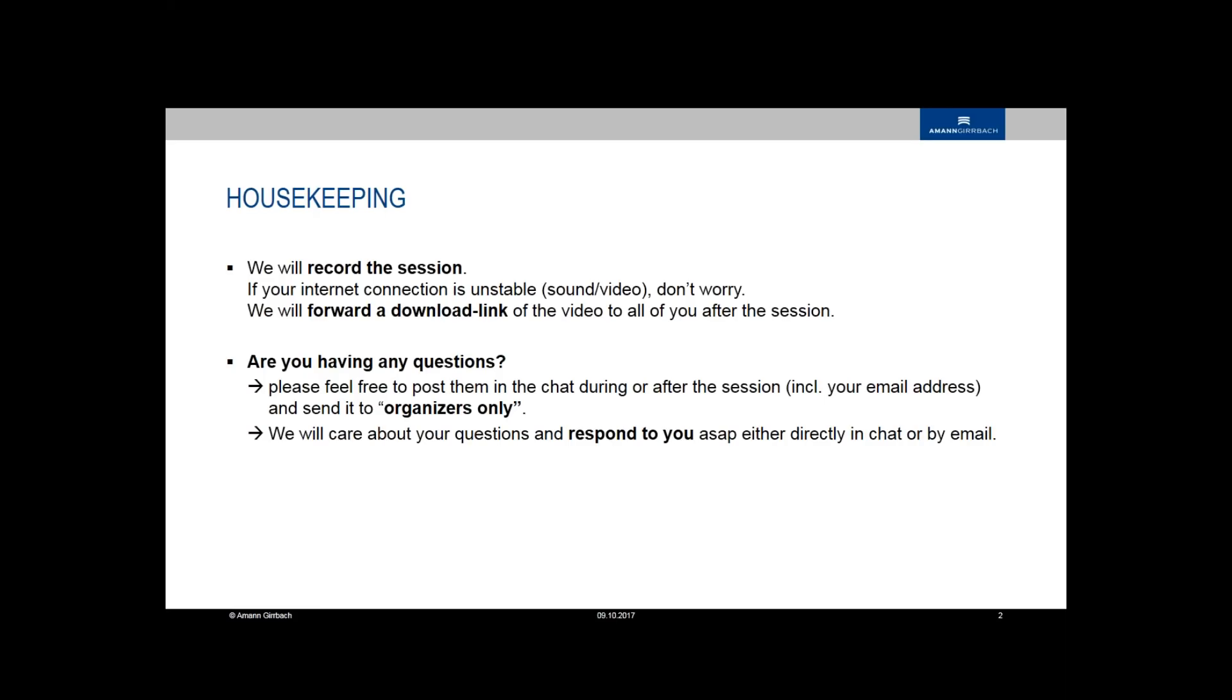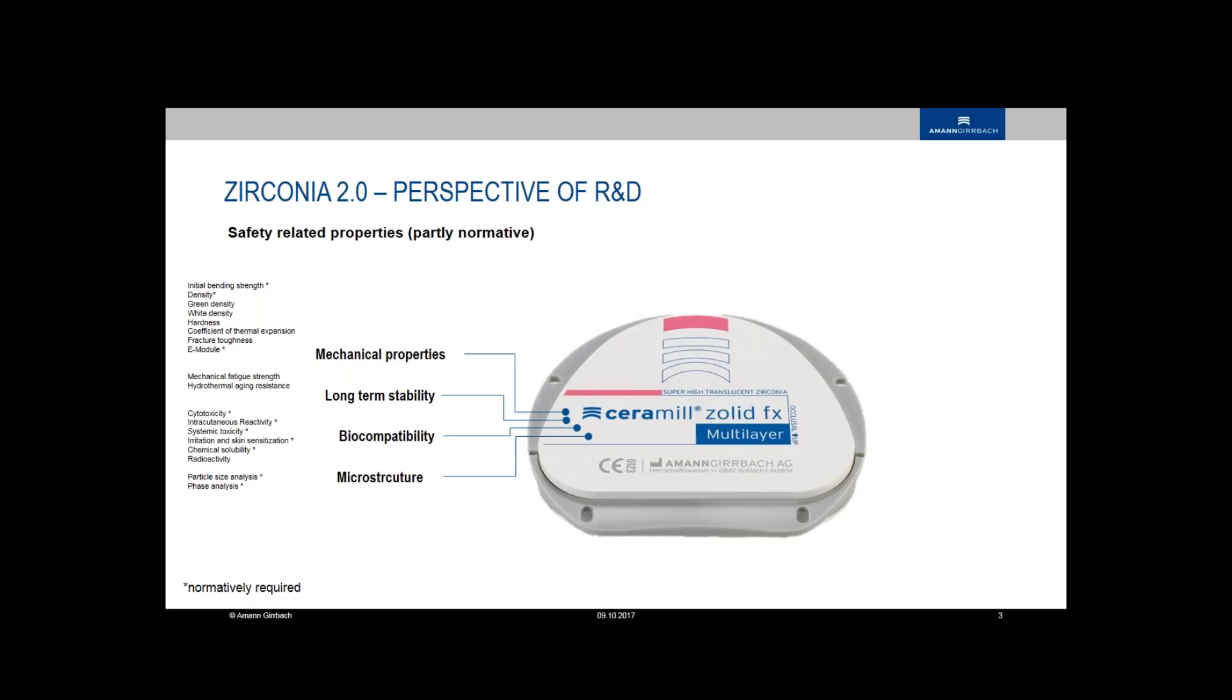Zirconia 2.0, it's a perspective of R&D. Research and development does a lot on Zirconia since 10 years now. As you can see here, Zirconia blank with all the typical properties on the left side like mechanical properties, long-term stability, biocompatibility and microstructure. All this is partly normative. That means you have to do all this testing anyway. Every manufacturer has to do this. Without doing this you will not get the certification and it is a medicine product only then. But this is all nothing special in our view that makes Zirconia 2.0.